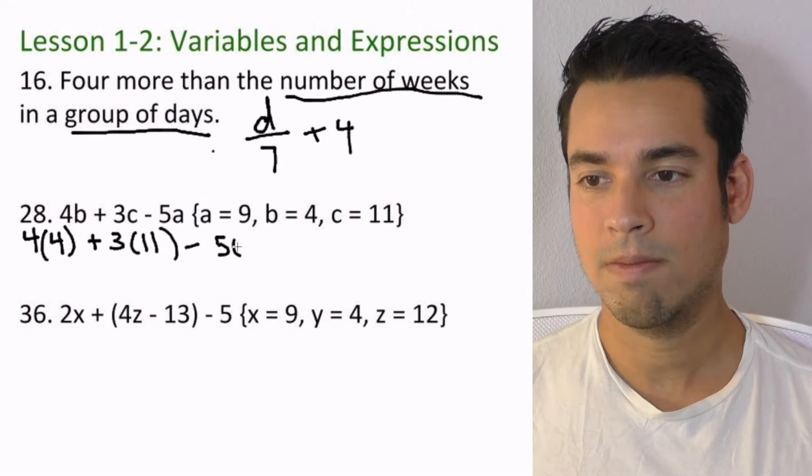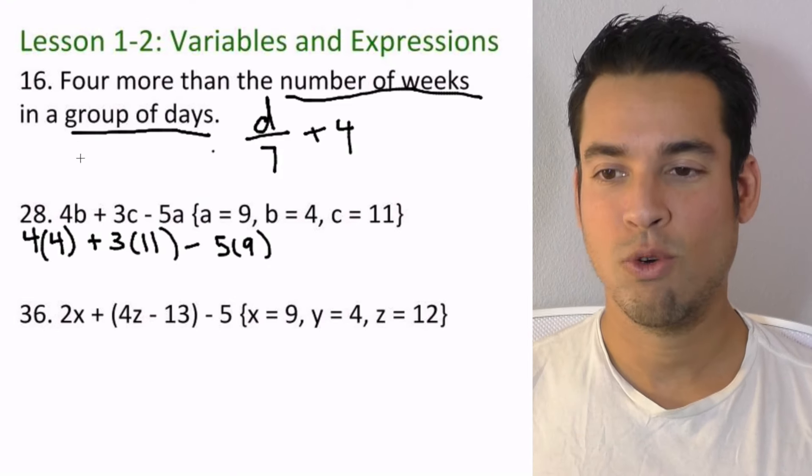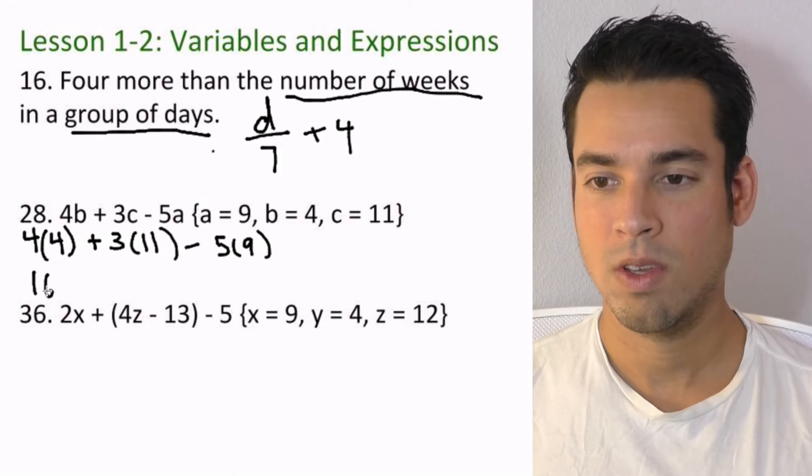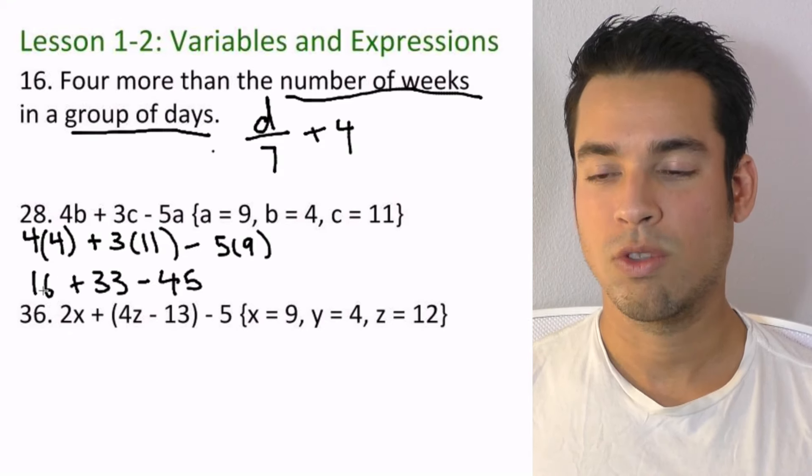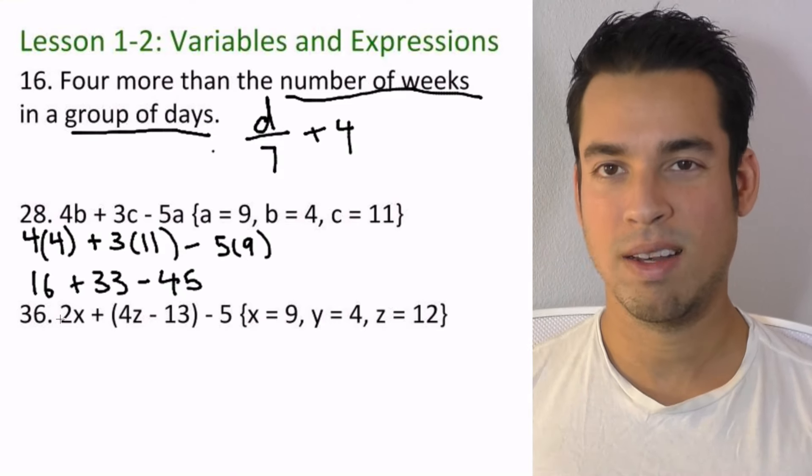And then we just evaluate. So what's four times four? That's 16. What's three times 11? That's 33. And what's five times nine? That's 45.